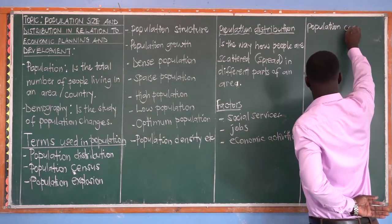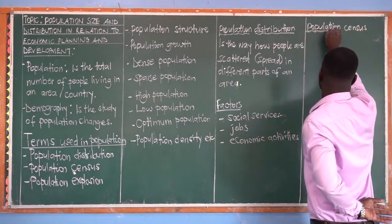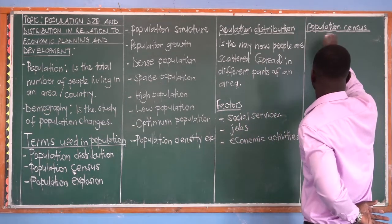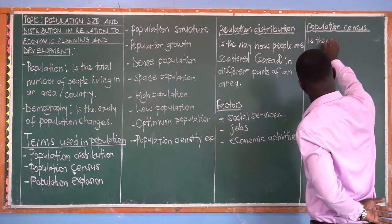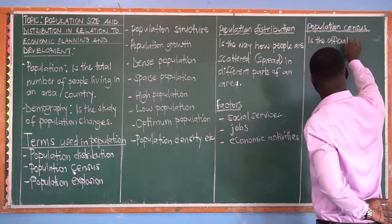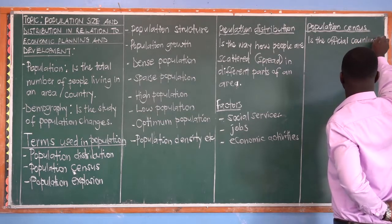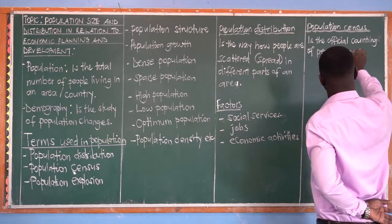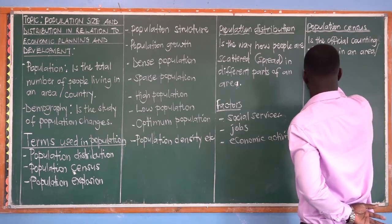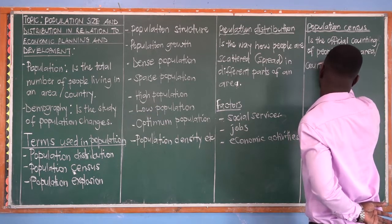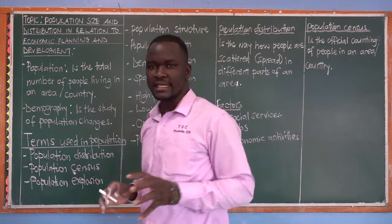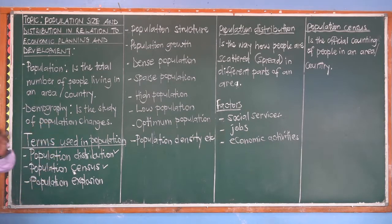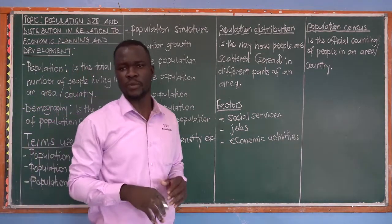Next is what we call population census. Population census deals with the counting of people. A national census is the official counting of people in a country. It is sometimes called the general counting of people in an area.